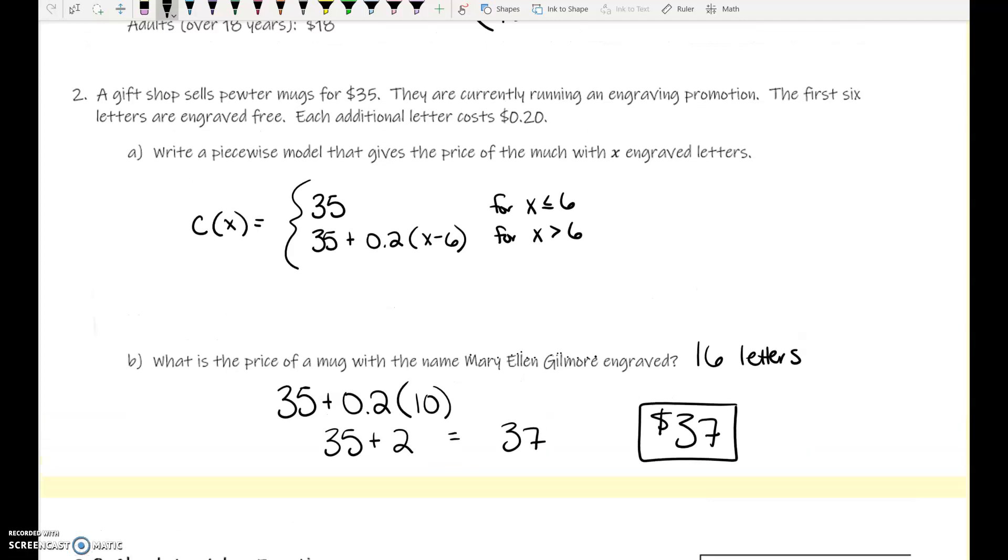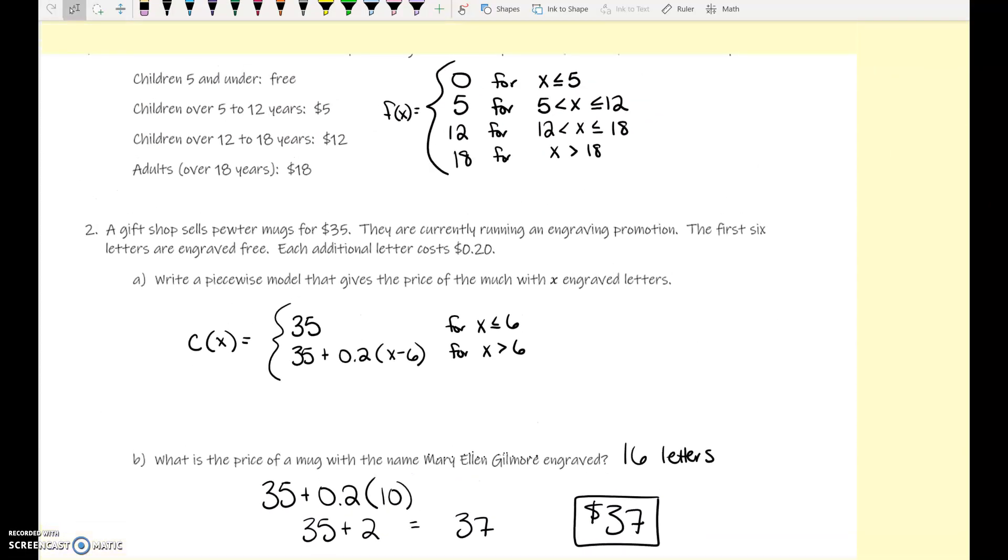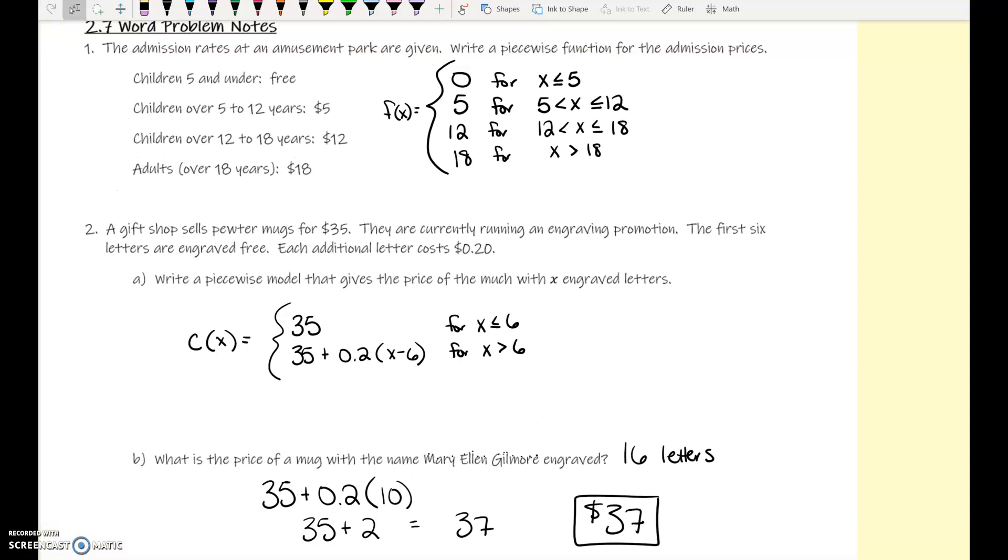Your assignment today has a couple of word problems. I think the only ones that it's asking you to write are step functions, like the admission rates of the amusement park. The rest of them, it gives you kind of a real life piecewise function and you have to use it. And there's a couple graphs for you to practice on as well.